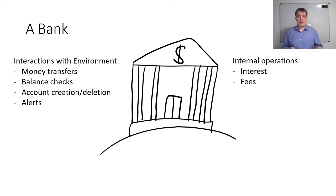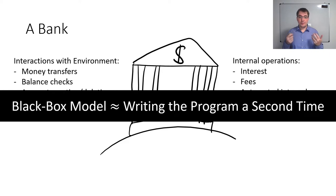For example, it might add interest at certain intervals, it might deduct fees from the account, and there might also be some automated internal transfers that might have either been scheduled by the user or be things like rounding up your checking transactions and transferring the difference to your savings account. All of this can be modeled in a black box model. But what it comes down to is that when we write a black box model of this whole program, we essentially wrote the program a second time.